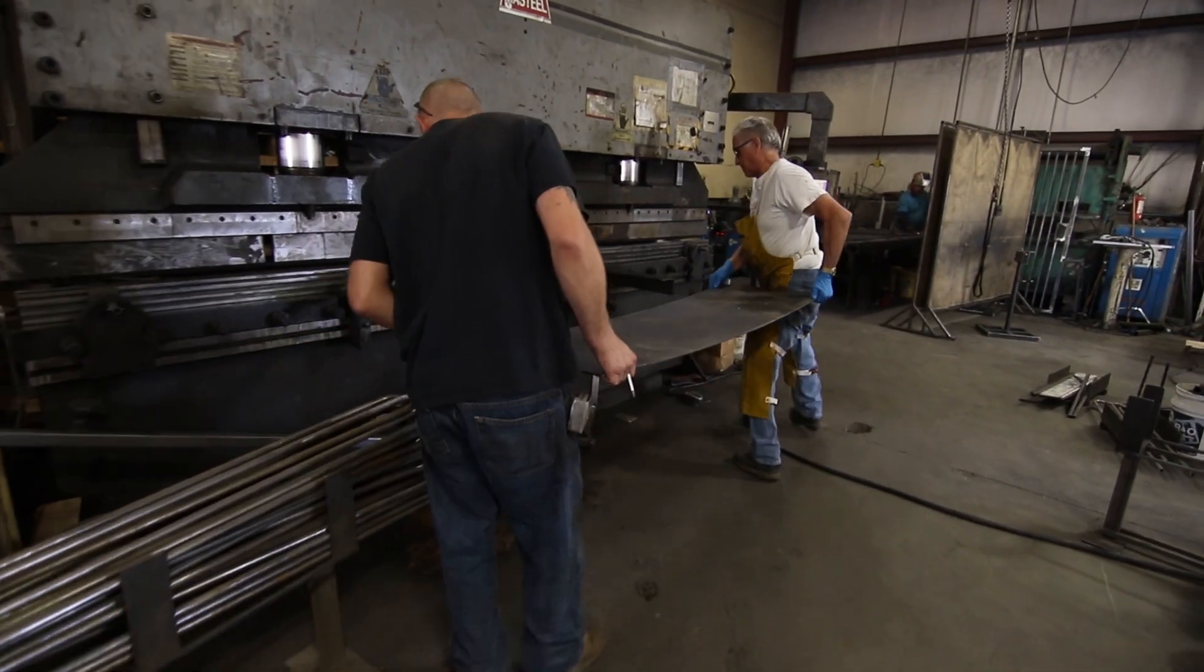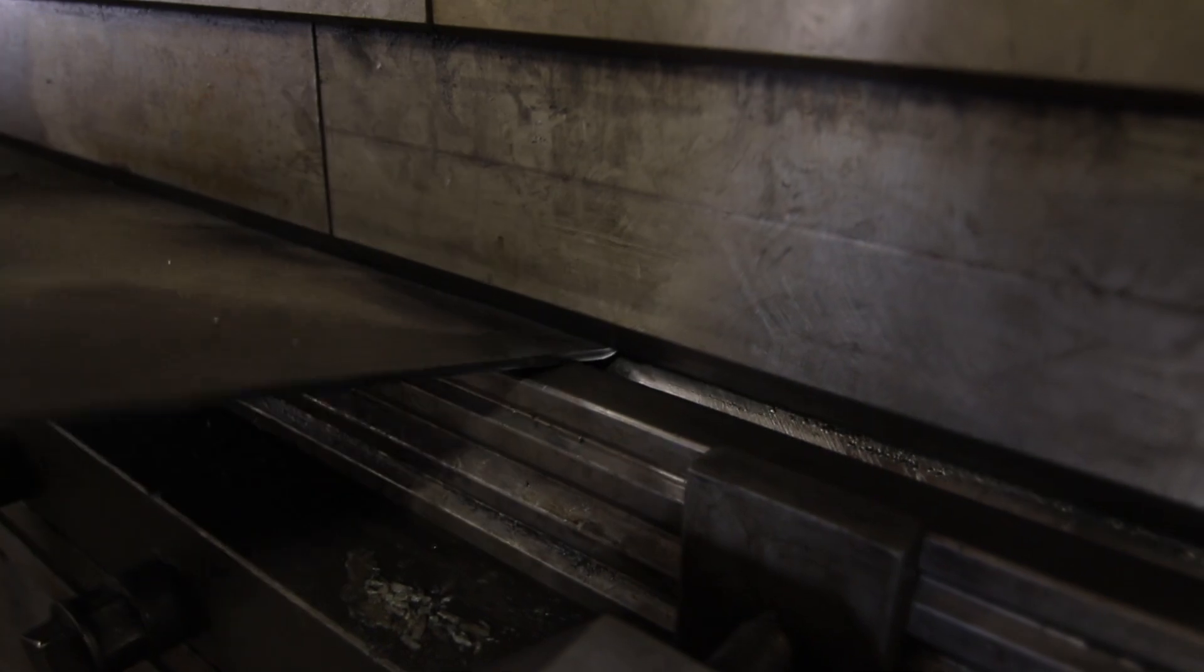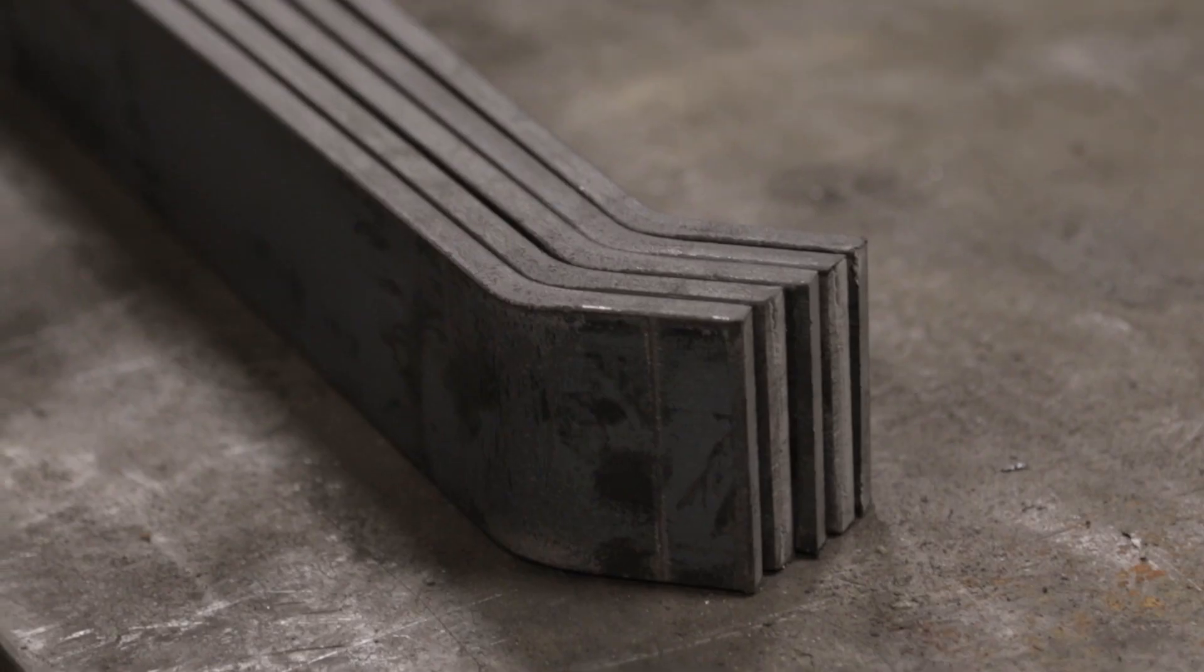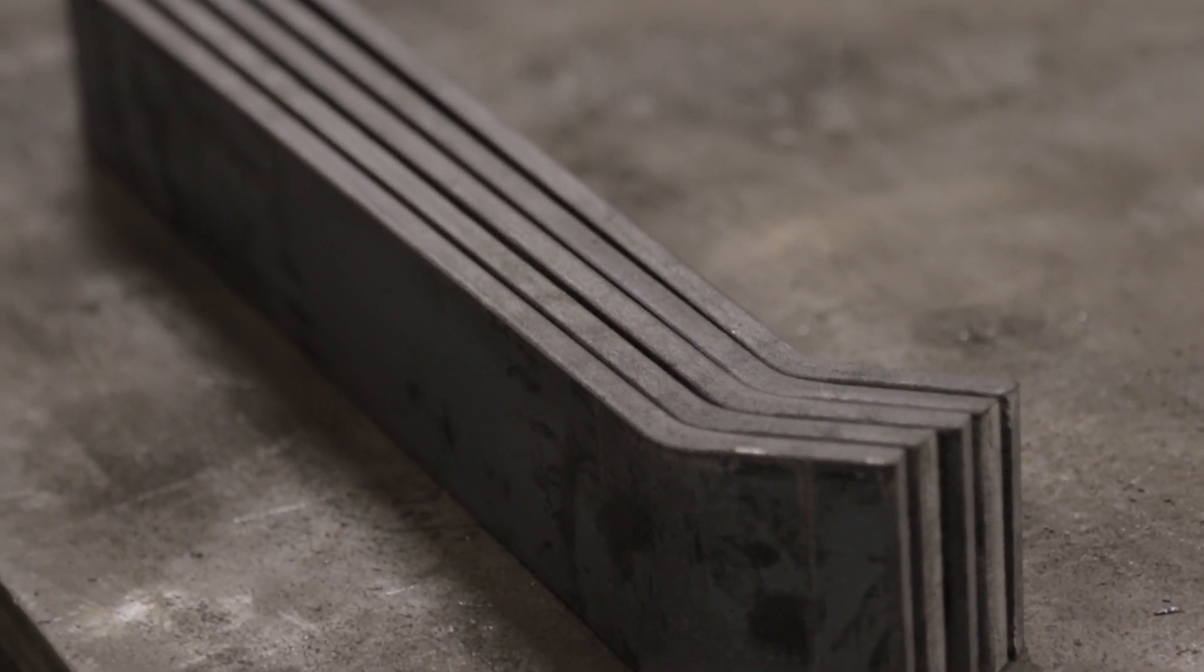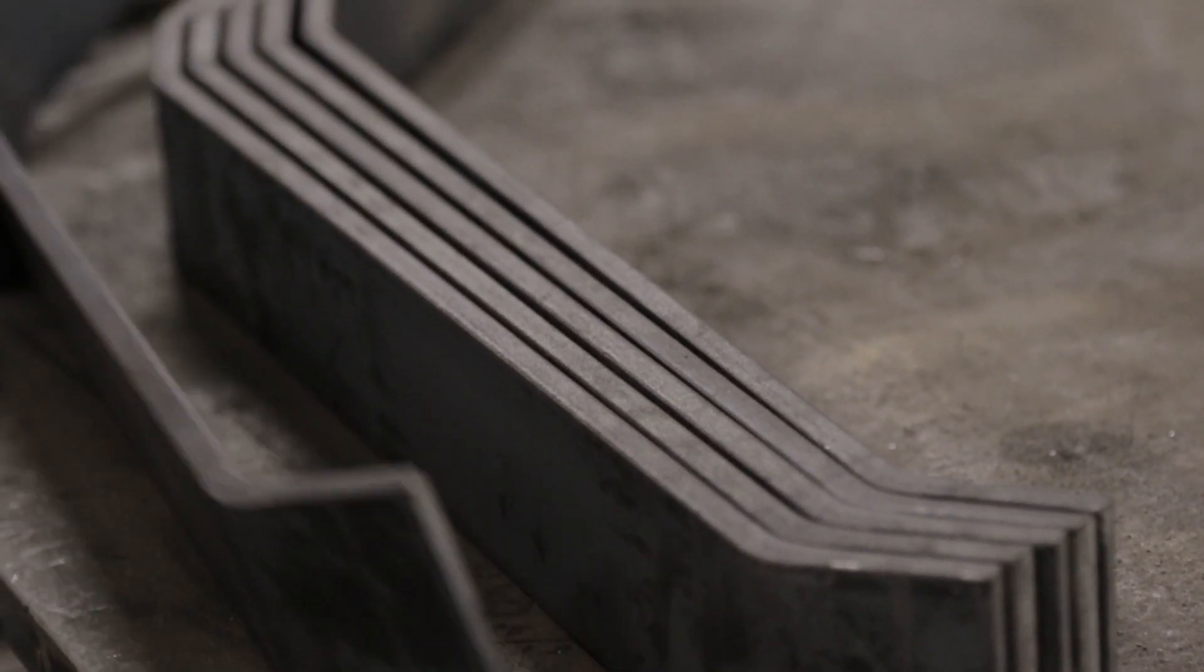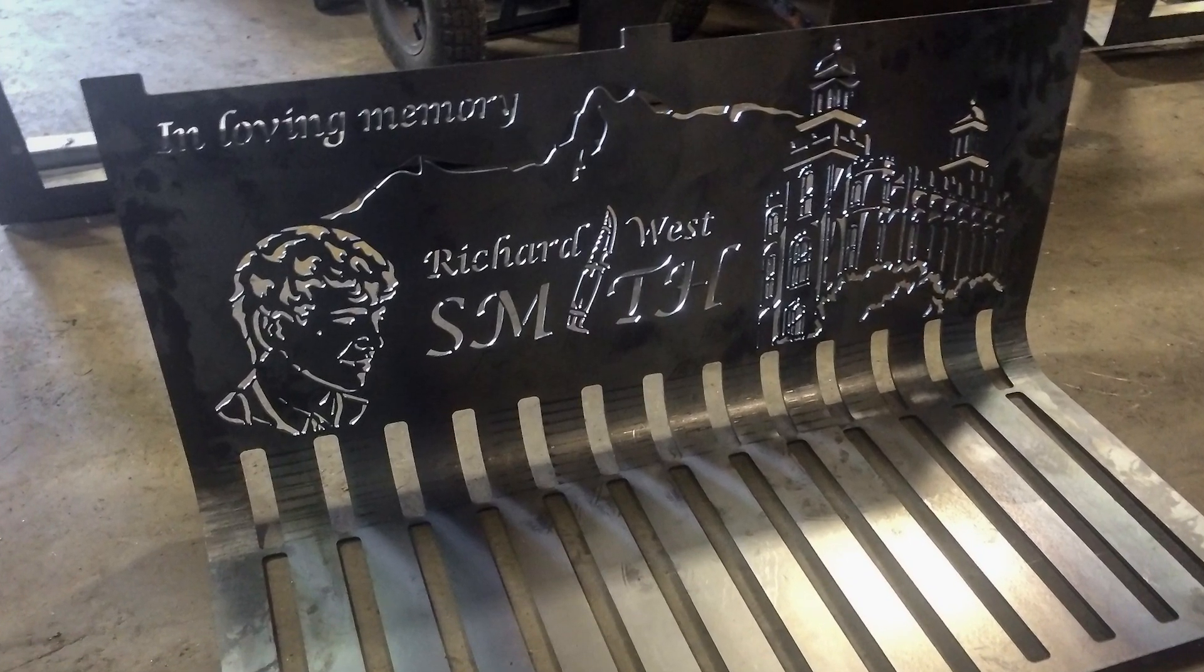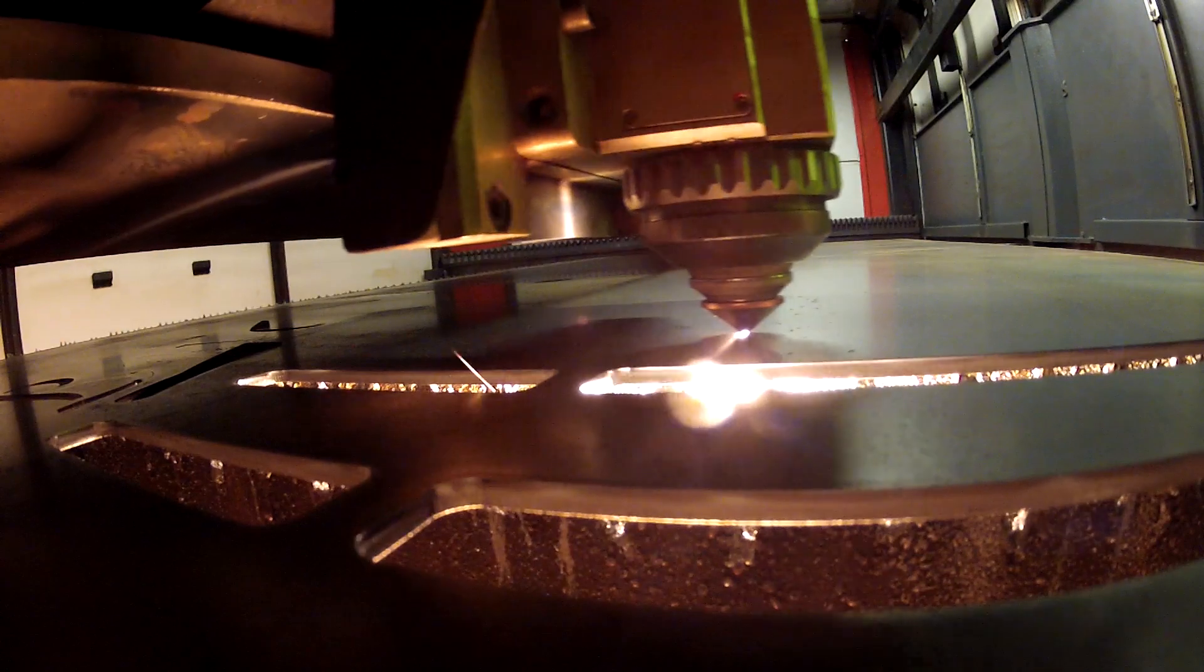Our CNC bending allows us to produce accurate bent parts. Our designers look at your idea and determine if welds can be eliminated by laser cutting a larger piece that can be bent up to form the part you want.